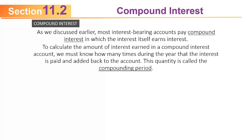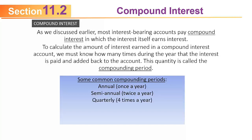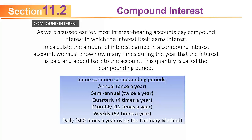To calculate compound interest, we need to know how many times during the year the interest is paid back and added to the account — that quantity is called the compounding period. Common compounding periods: annual is once a year, semiannual is twice a year, quarterly is four times a year, monthly is 12 times a year, weekly is 52 times a year, and daily — using the ordinary method — is 360 times a year.